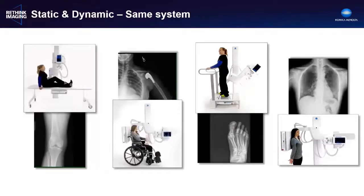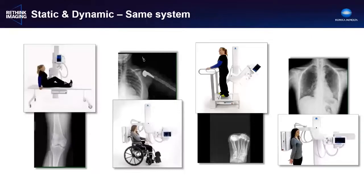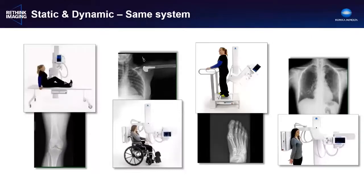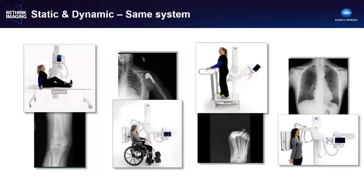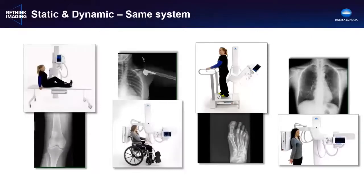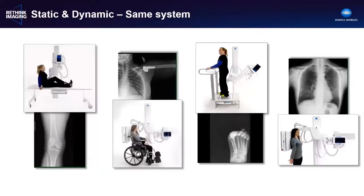It's important to note that DDR images are acquired with an advanced x-ray system that is also a general x-ray system capable of acquiring all conventional static imaging views. Dynamic and static images can be acquired with the same system in the same session. A DDR acquisition typically only adds about a minute to the overall exam time.